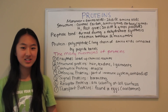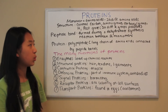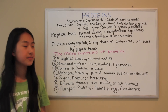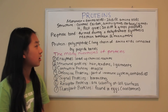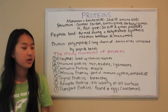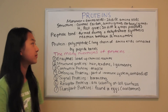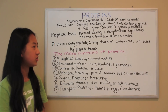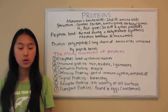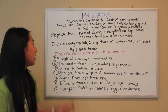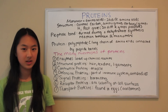Proteins are the third type of macromolecule. The monomer is called an amino acid and there are 20 different types of amino acids. The structure of a protein is a central carbon, amino group, carboxyl group, hydrogen, and a rest group. There are 20 different rest groups possible and they differ from protein to protein. A peptide bond is formed during a dehydration synthesis reaction between two monomers and holds two amino acids together. A protein is a polypeptide, or a long chain of amino acids connected by peptide bonds.